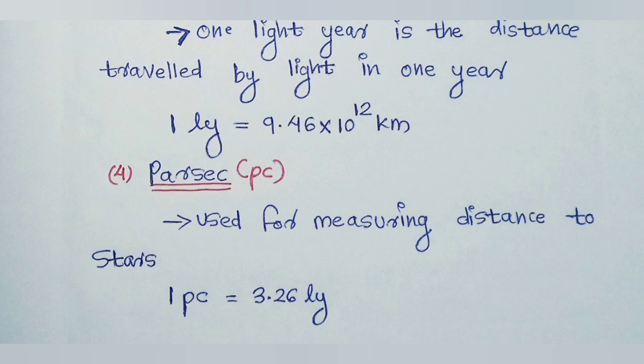Used for measuring distance to stars. 1 parsec equals 3.26 light years. I have to keep the notes and give feedback. See you — details in the description. Namaskar.